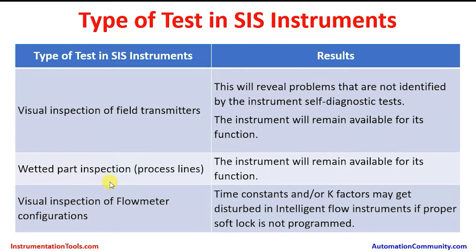Wetted part inspection: this is for the process lines, and the instrument will remain available for its function. Visual inspection of flow meter configurations: time constants and K-factors may get disturbed in intelligent flow instruments if a proper soft lock is not programmed. Soft lock means there is an internal lock requiring an enabling key — like password protection. This is applicable for inline flow meters of later technology, such as Coriolis mass flow meters, vortex flow meters, and magnetic flow meters.